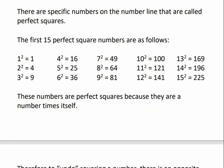There are specific numbers on the number line that are called perfect squares. The first 15 perfect squares are as follows. These numbers here on the right are perfect squares: 1, 4, 9, 16, and so on. All of these are perfect squares, and the reason why we call them perfect squares is because we can get those numbers by multiplying another number times itself. For example, 9 is a perfect square because 3 squared, or 3 times 3, equals 9. 81 is a perfect square because 9 times 9 is 81. So anytime we can get a number by multiplying another number times itself, it's a perfect square.